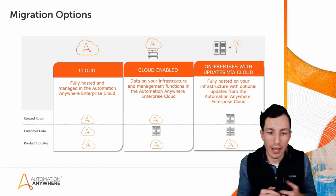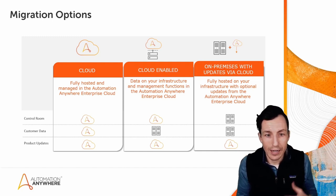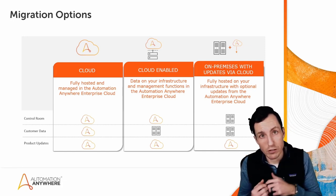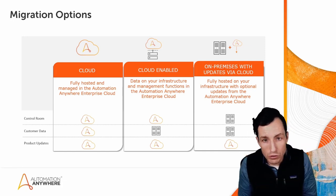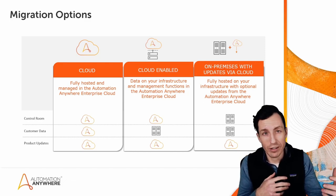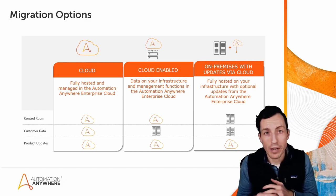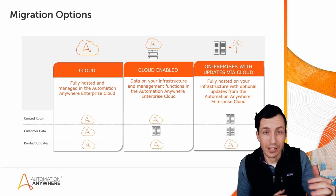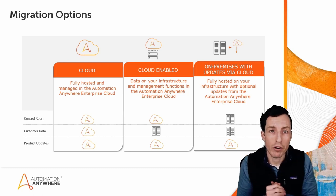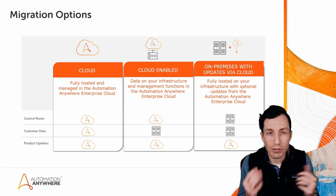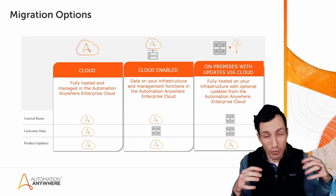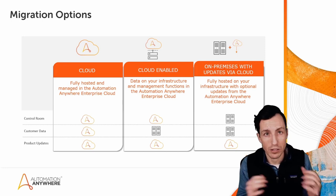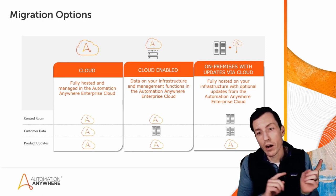In the pure cloud option, your control room is in the cloud, your data and database are securely in the cloud, and your product updates are also on cloud. In the middle we have a cloud-enabled environment where your data, infrastructure, and management functions are local, but there is a cloud control room component — kind of a hybrid. You'd want to make sure you're doing some clustering with your database.